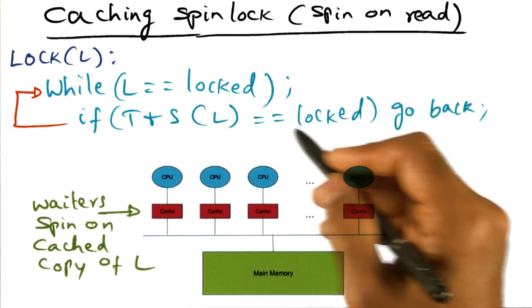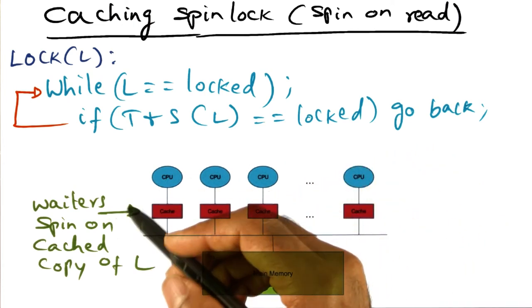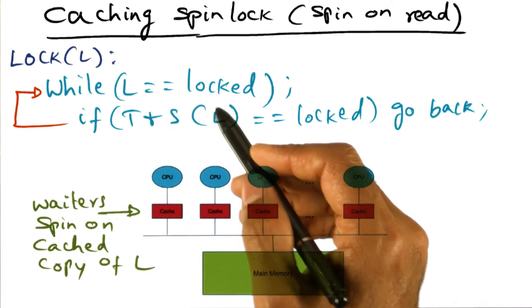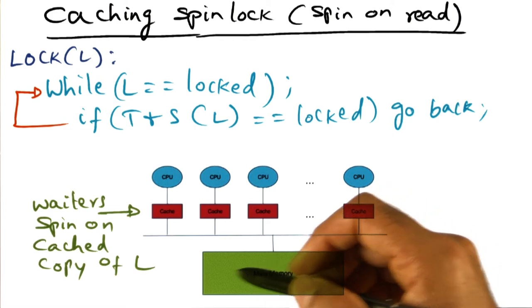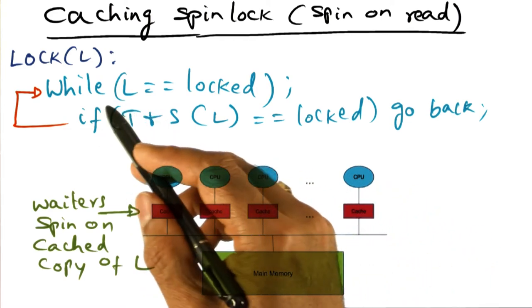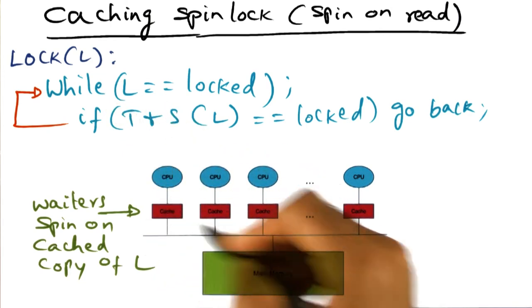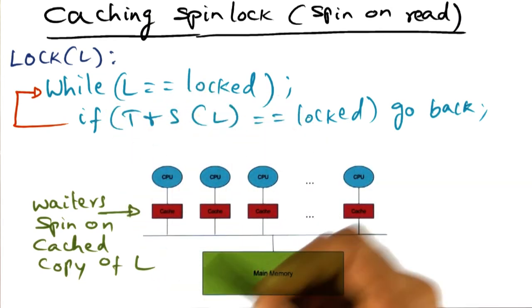The unlock operation of course is pretty straightforward. The guy that wants to unlock is simply going to change the memory location to indicate that L is no longer locked. So that's all it has to do, and then the other processes can observe it through the cache coherence mechanism and be able to acquire the lock.